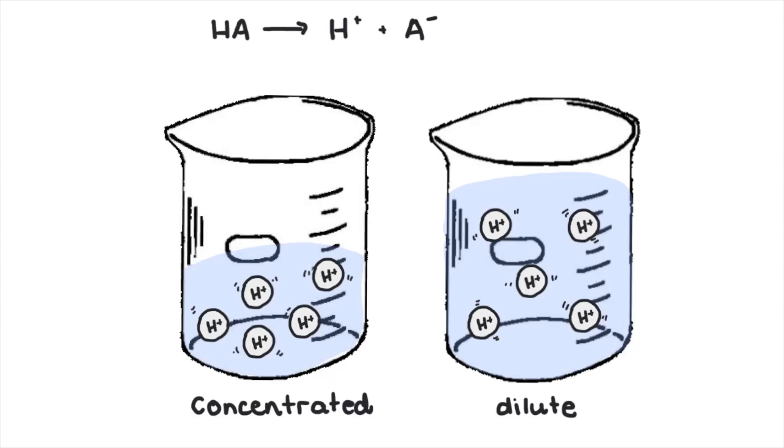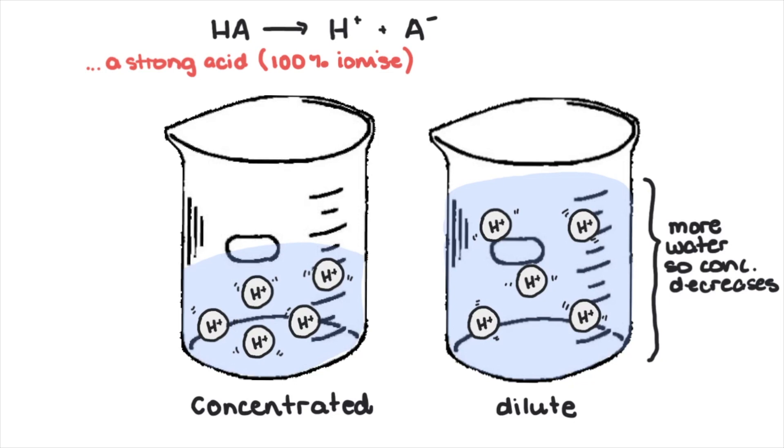Diluting a solution will lead to a reduction in its concentration. So when diluting an acid, particularly strong acids that 100% ionize, naturally we expect the pH to increase towards 7, since there is a greater amount of water surrounding your hydrogen ions. However, what happens to the pH of a strong alkaline solution when it is diluted?